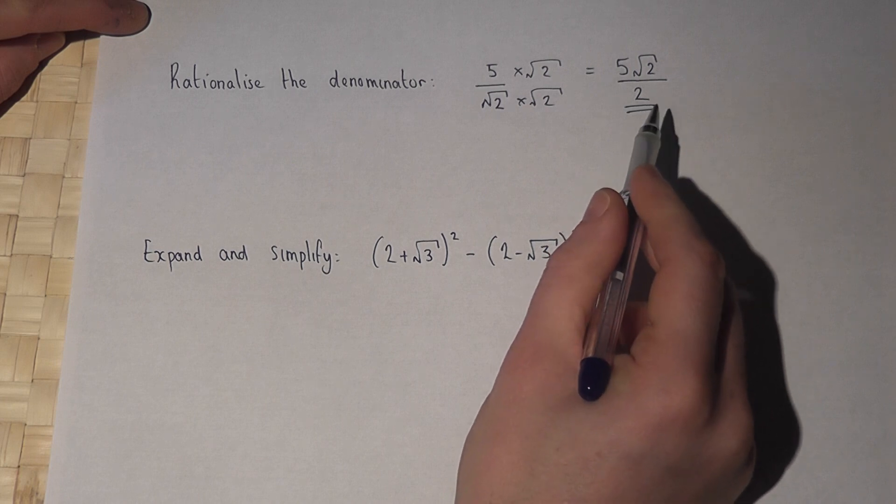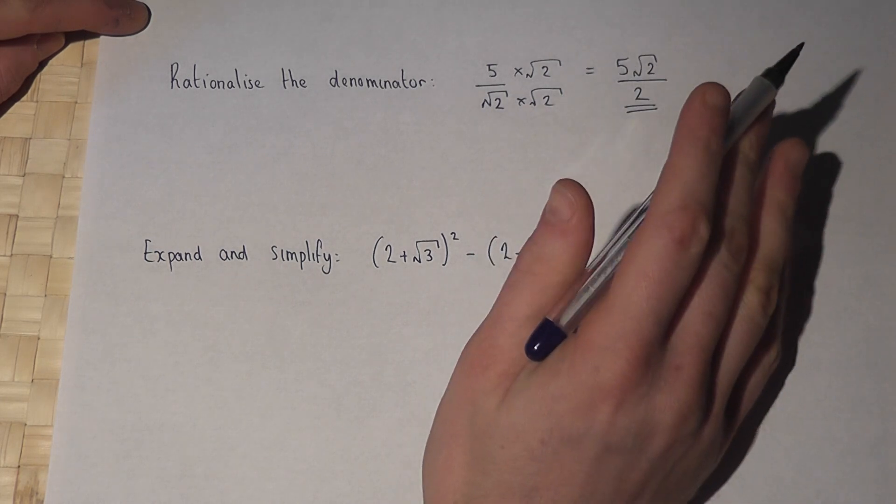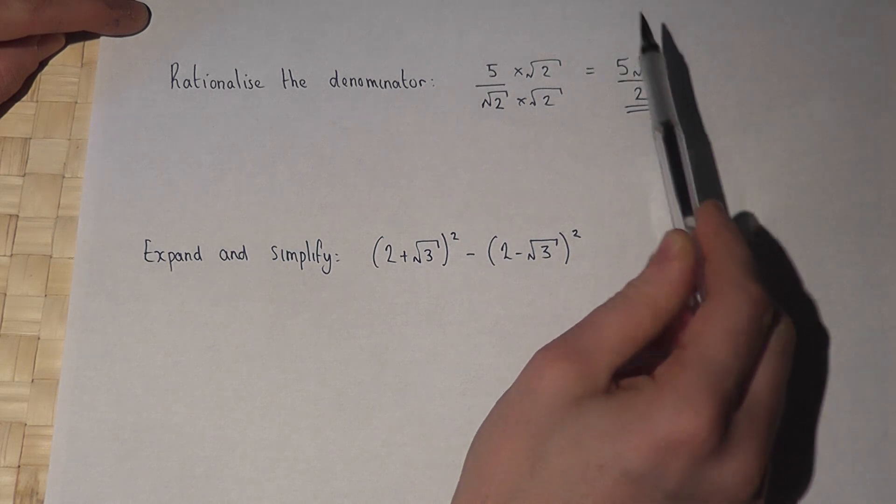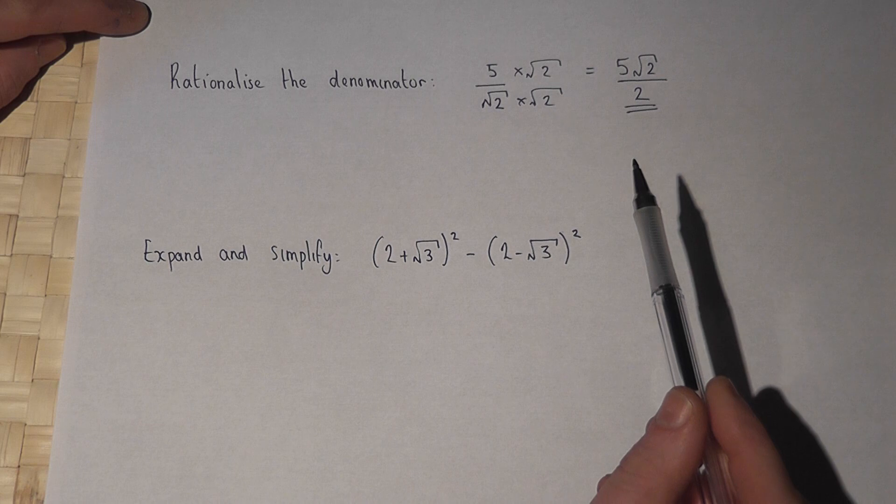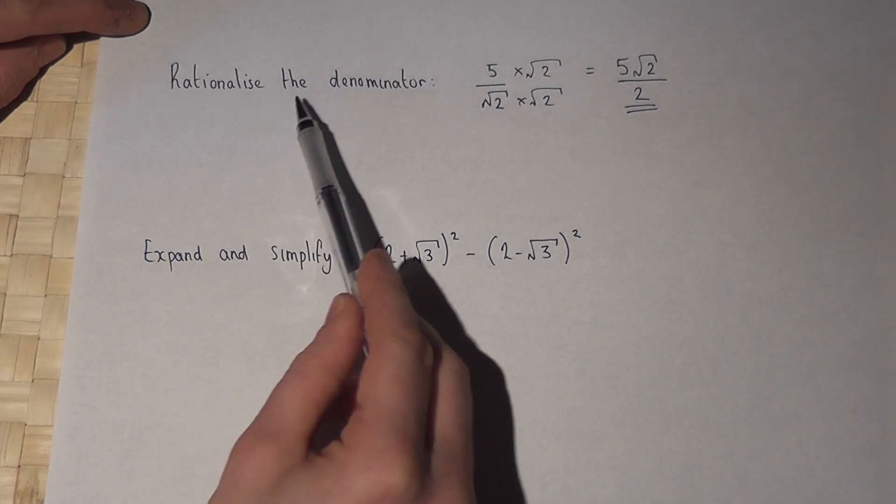And this answer is it. We've finished. And what we've achieved is we've moved the square root from the bottom of the fraction to the top of the fraction. And we've therefore rationalised the denominator.